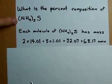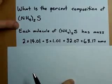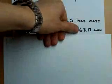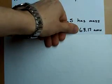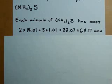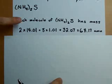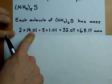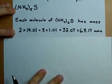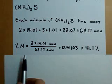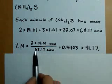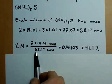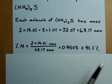Now, to calculate the percentage composition, we simply find out how much of the total 68.17 atomic mass units each element accounts for. Nitrogen accounts for 2 times 14.01 atomic mass units. 2 times 14.01 divided by the total mass, 68.17, gives 0.41103, which is approximately 41.1%.